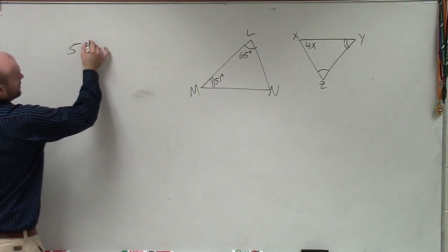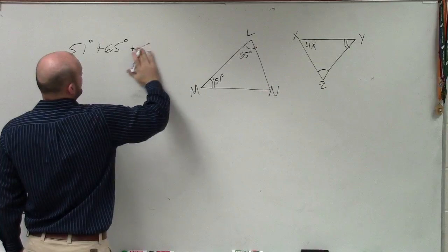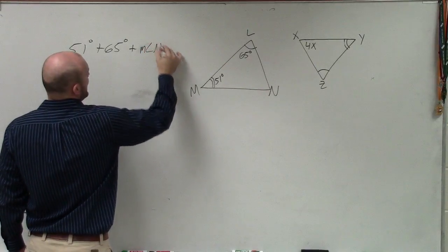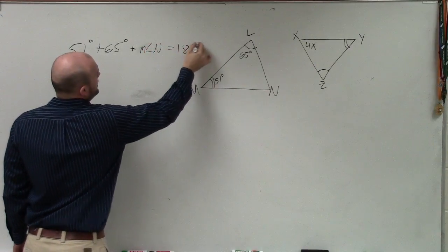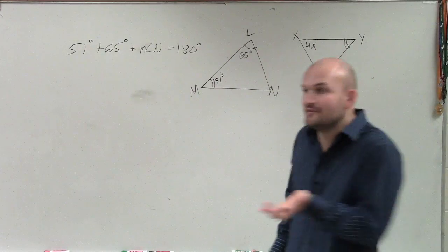I can say that 51 degrees plus 65 degrees plus the measure of angle n equals 180 degrees. By that third angle theorem, I know I can figure out that third angle.